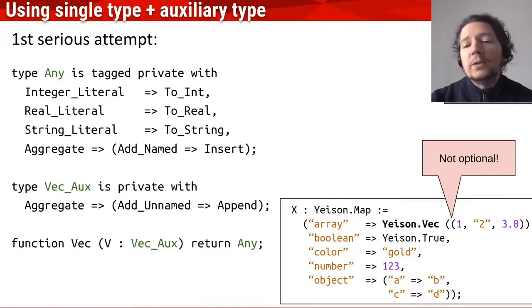And in the end, I didn't like this solution because it has an asymmetry between vectors and maps, which is kind of ugly. Of course, you could force map initialization with another auxiliary type, still you would have the problem of the two parentheses.